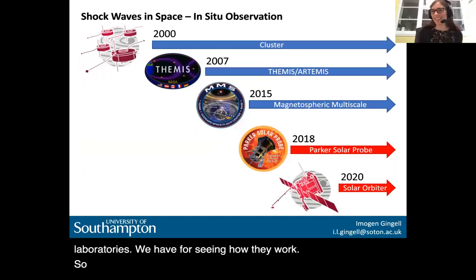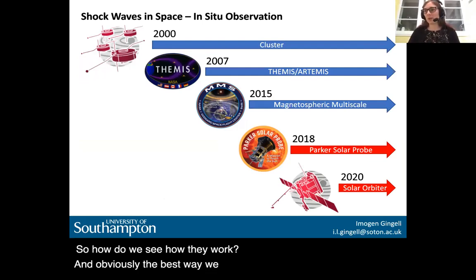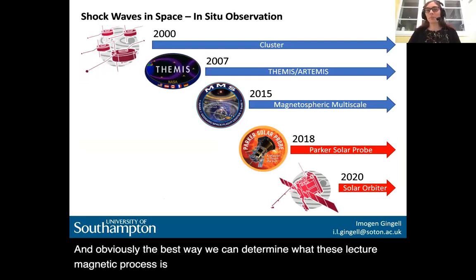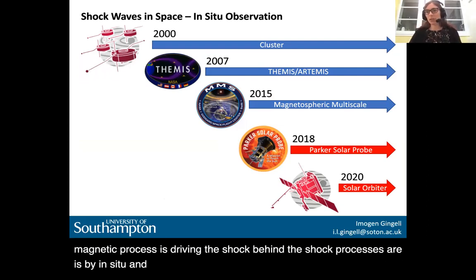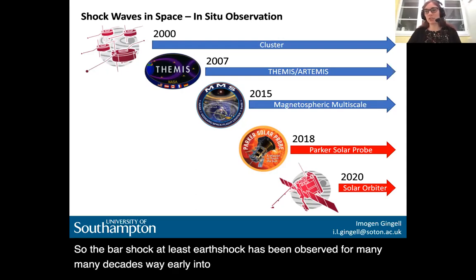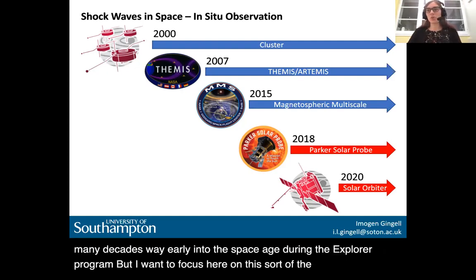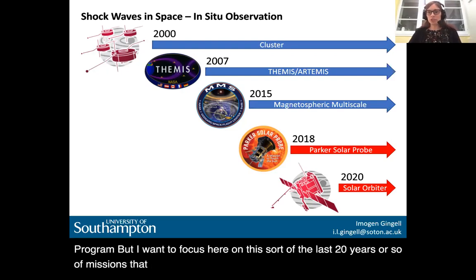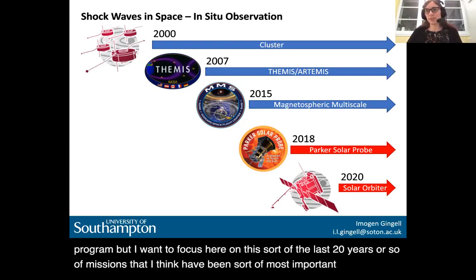The best way to determine what electromagnetic processes drive the shock is by in situ observation, which requires spacecraft. Earth's bow shock has been observed for many decades, way back into the space age during the Explorer program. I want to focus on the last 20 years or so of missions most important to in situ observations of shocks — this isn't an exhaustive list, but these are the highlights I'll be referencing in the slides to come.